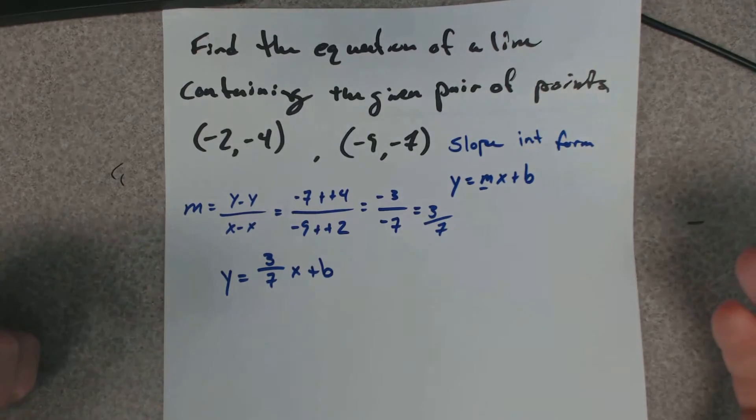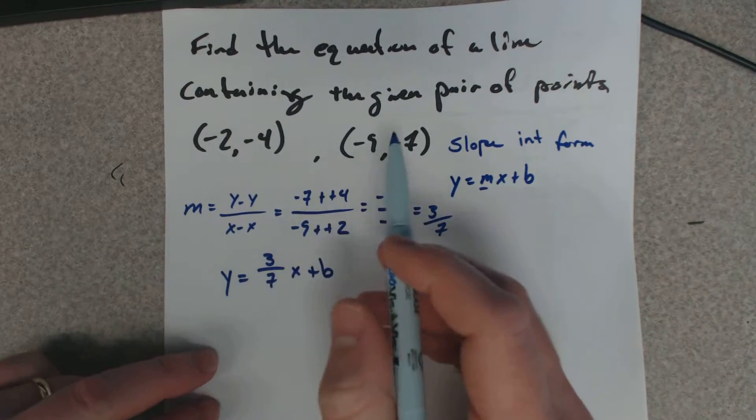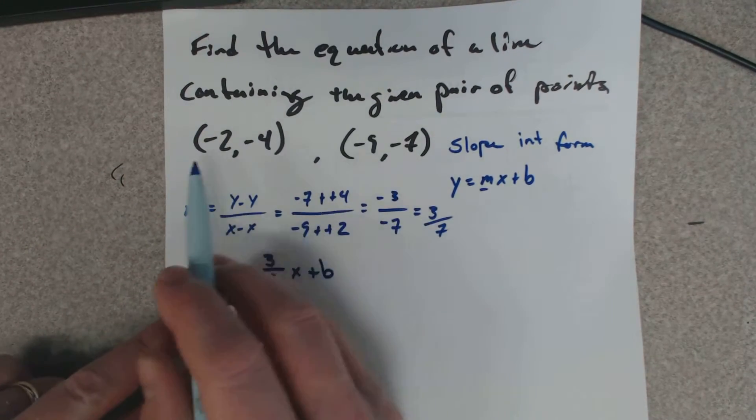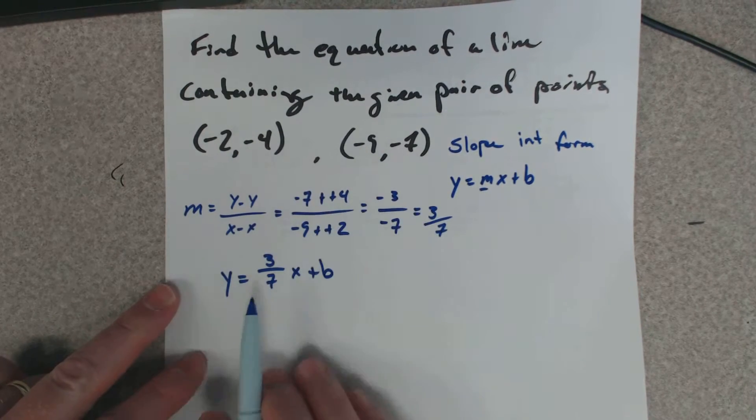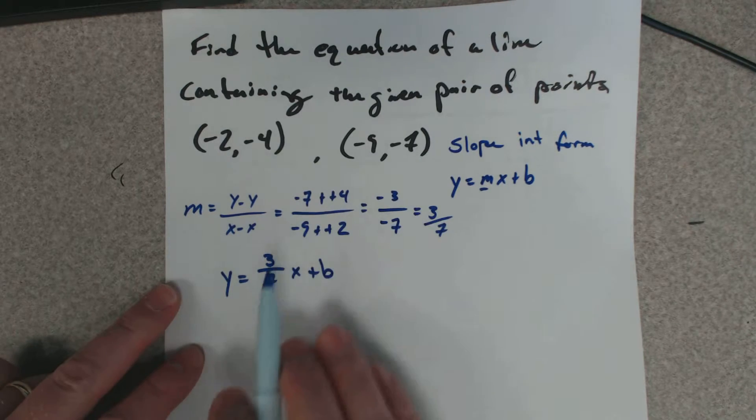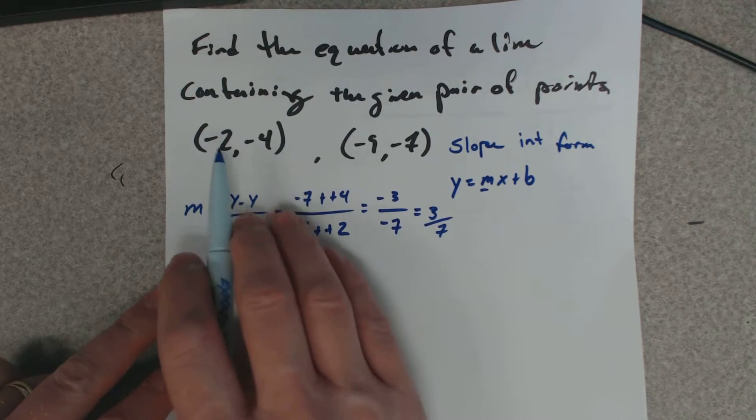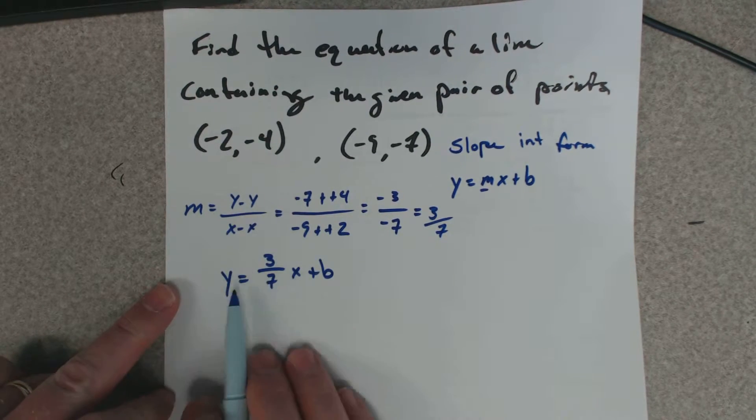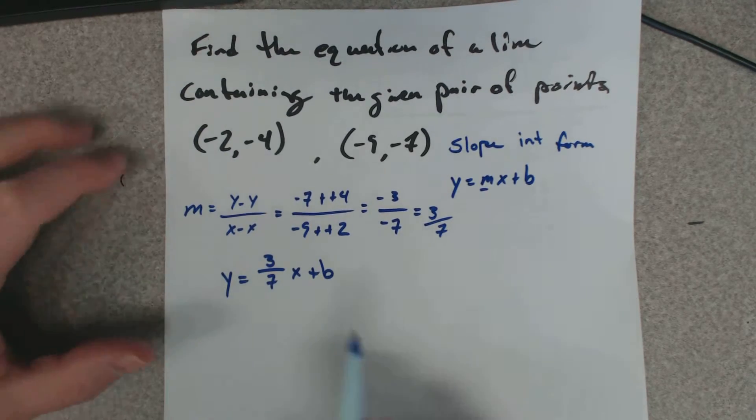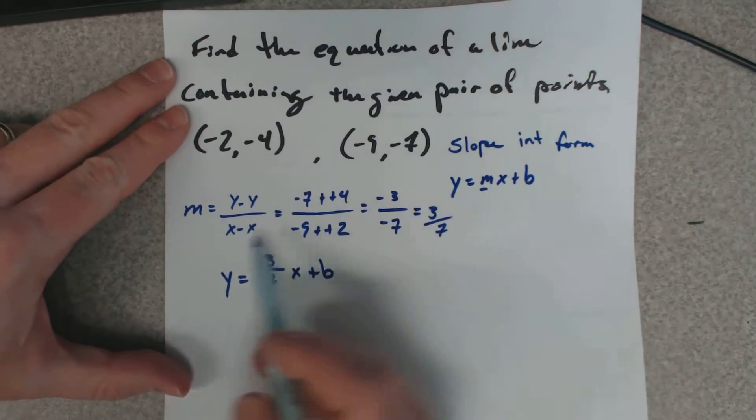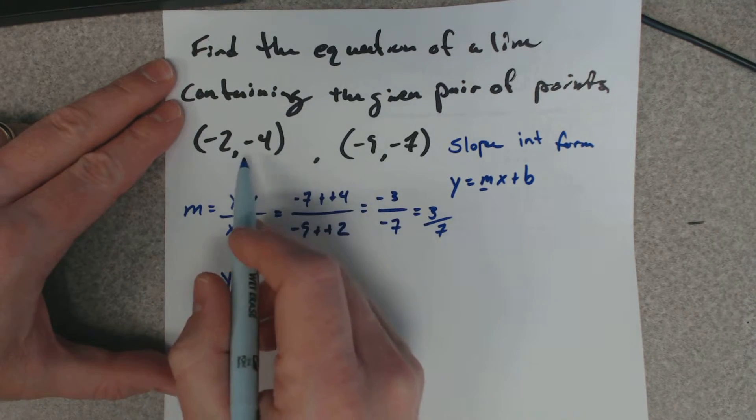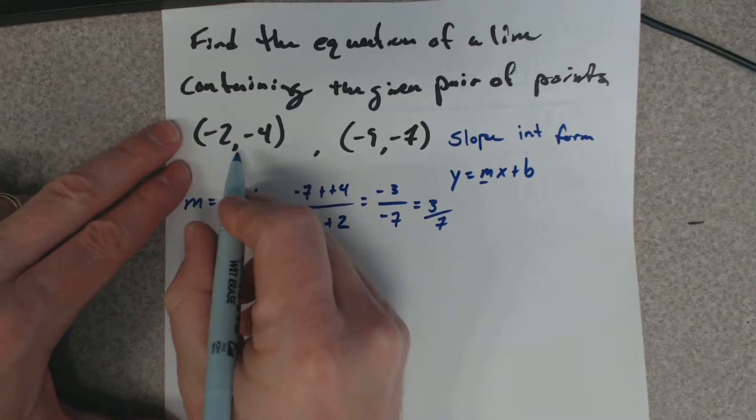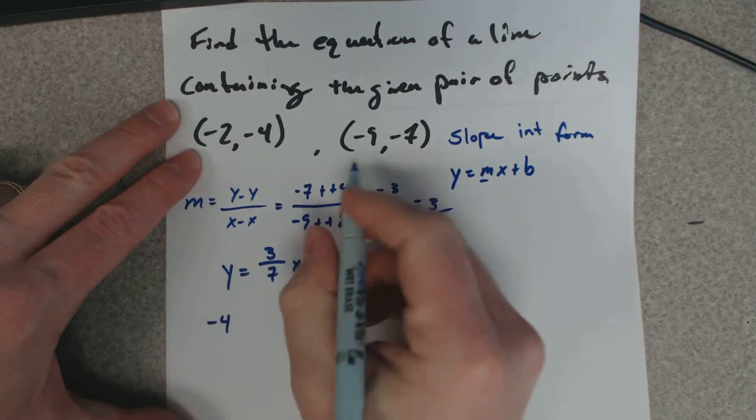Remember I said to describe any line you just need a slope and a point. Now these points are on the line, so each point works in this equation. If I plug this point in, I should get an equality. So here's how you do this: first you find the slope, second you plug the slope in, then you pick one of these points.